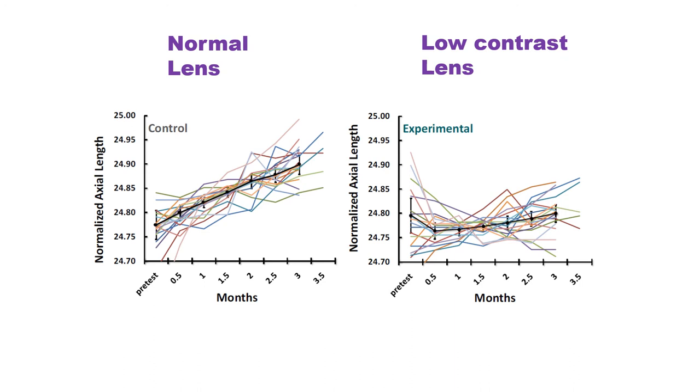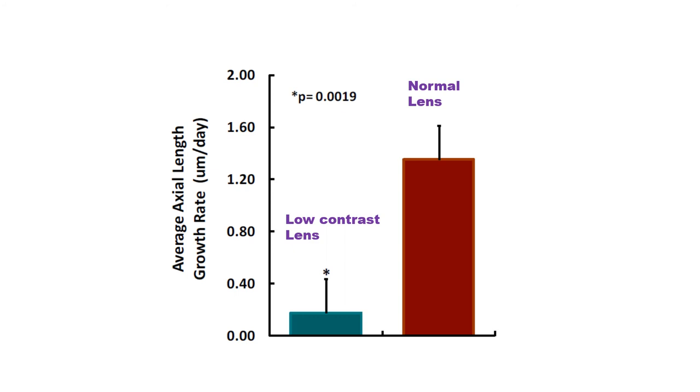Here are the results. The experiment was carried out over three months, shown on the x-axis, and we monitored eye length, shown on the y-axis. As you can see from the black line, which is the average for all the children, the eyes with the normal lens grew at a constant rate. However, growth was greatly slowed for the eyes wearing the low contrast lens. All the thinner colored lines are measurements for individual children. Here are the same results shown another way. This just shows the huge difference in the rate of eye growth over the entire three months, where the low contrast lens virtually stopped eye growth compared to the normal lens.